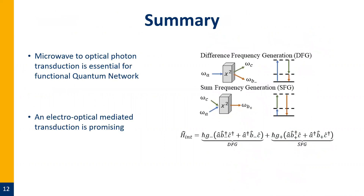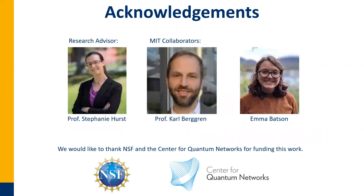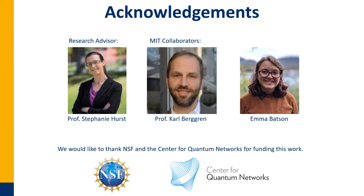To wrap up: for a successful quantum network, we need to do microwave to optical frequency transduction. The way to do that is through chi-squared materials like ITO. I specifically talked about an electro-optical mediated approach, which can be done in a number of ways. This electro-optical approach also has advantages for other forms of quantum logic — so I think it's a promising path. I'd like to thank Dr. Stephanie Hurst, our MIT collaborators Dr. Karl Berggren and PhD student Emma Batson, as well as NSF and the Center for Quantum Networks.